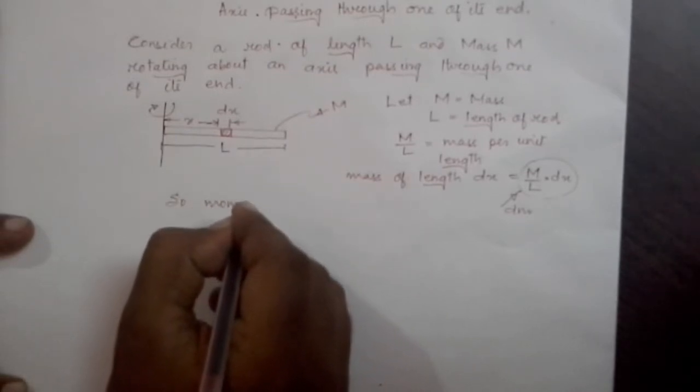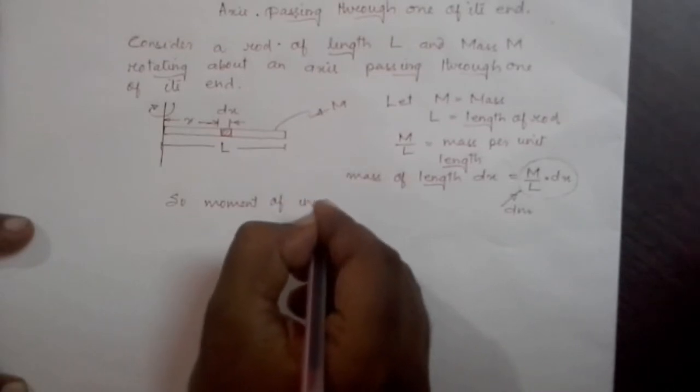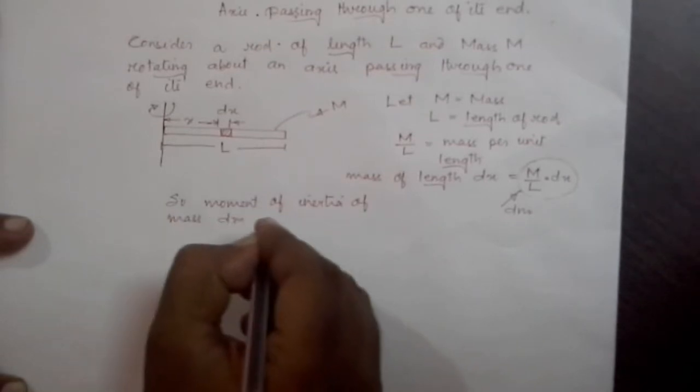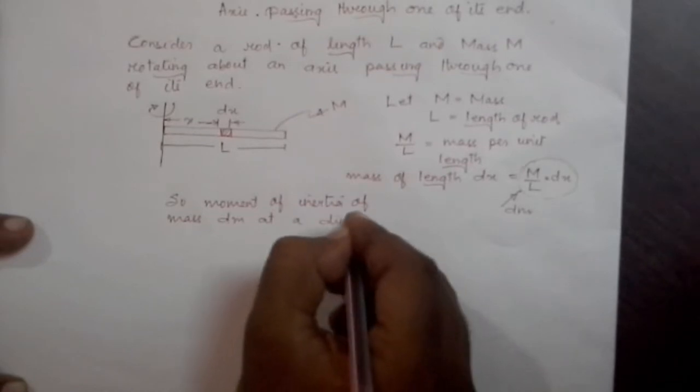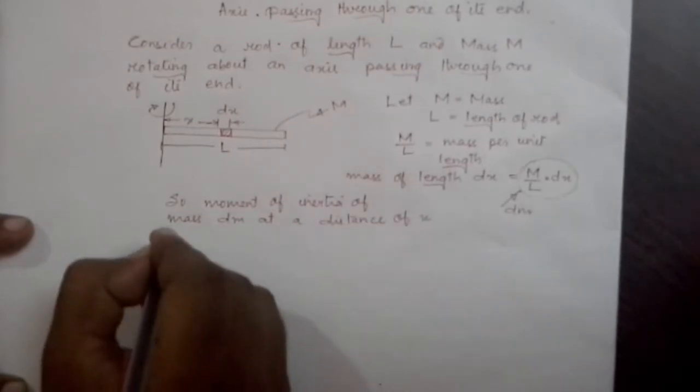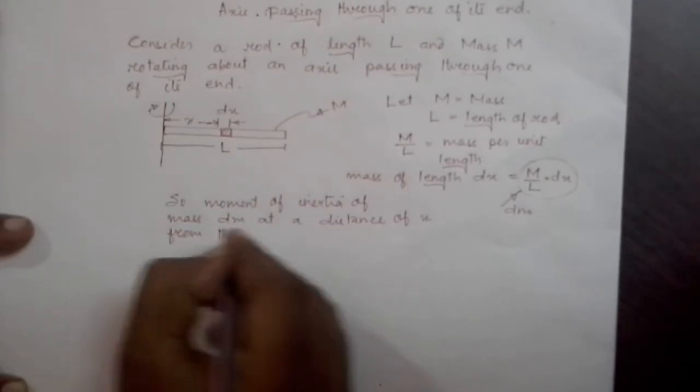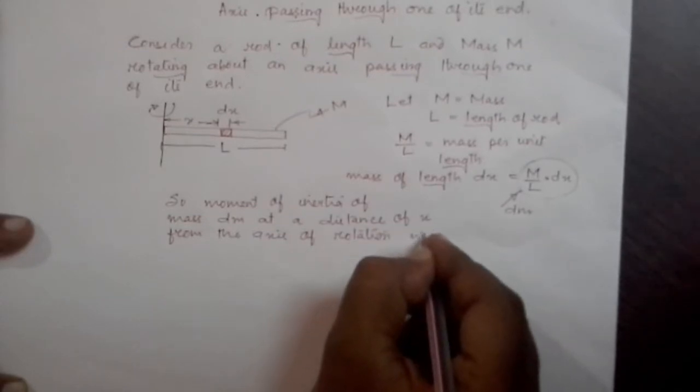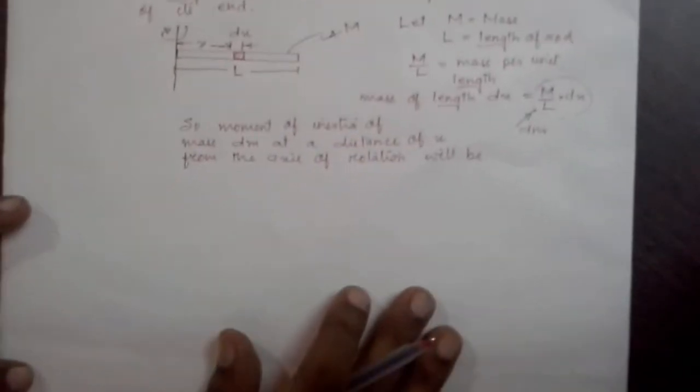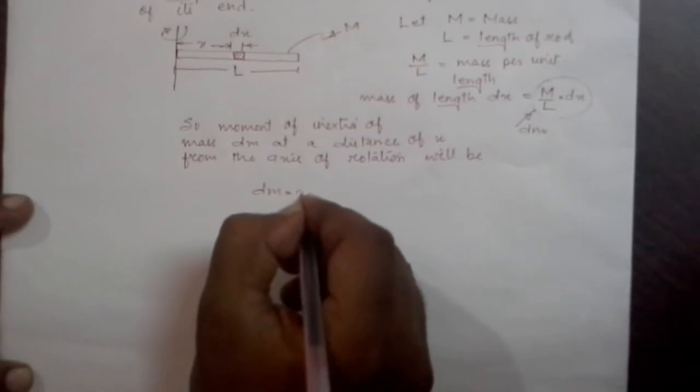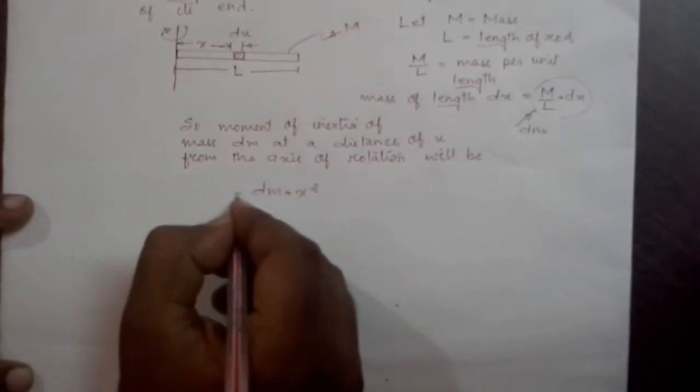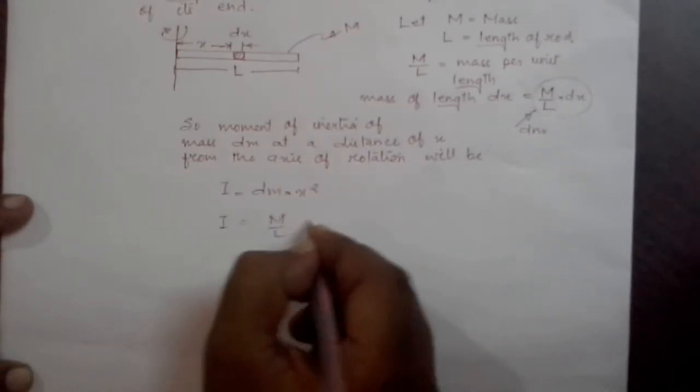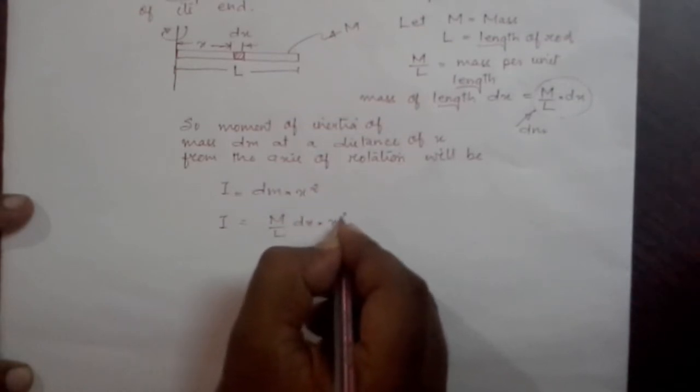So moment of inertia of mass dm at a distance of x from the axis of rotation will be dm into x square. Let us call this to be I, or we can say I is equal to, in place of dm I can put M by L into dx into x square.